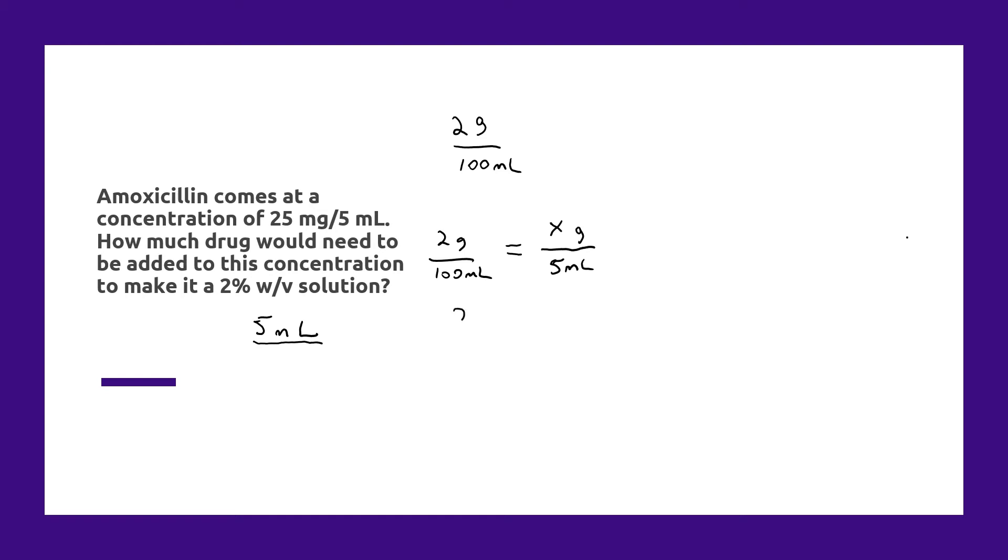And then to solve that, we simply take 2 grams divided by the 100 mLs, and you cross multiply to the 5 mLs. The units cancel out. And I'll just pull up my calculator here, although I probably could do this by memory. So 2 divided by 100 multiplied by 5 is 0.1 grams.